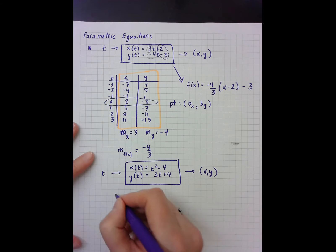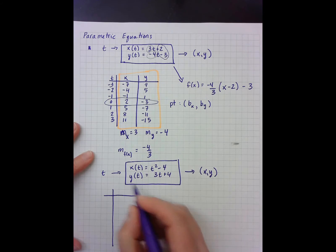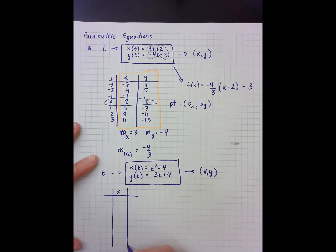So again, I'm going to make a table of values. t, x, y, negative 3, negative 2, negative 1, 0, 1, 2, 3. Give me a nice broad range of numbers.